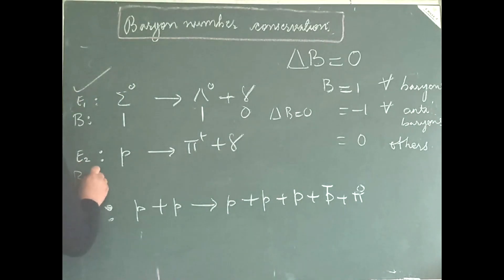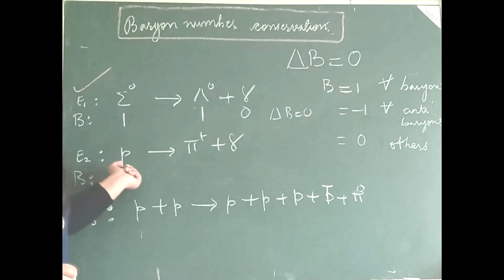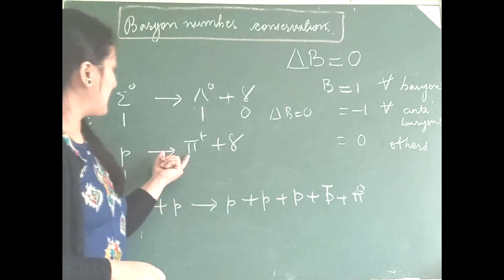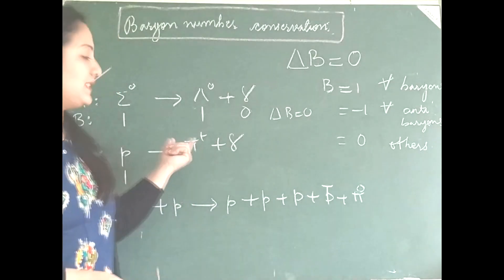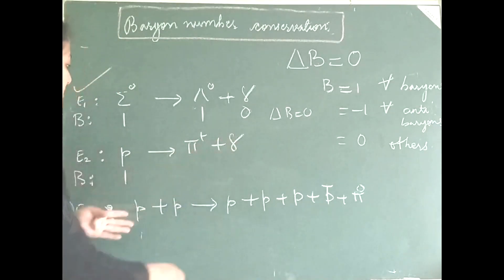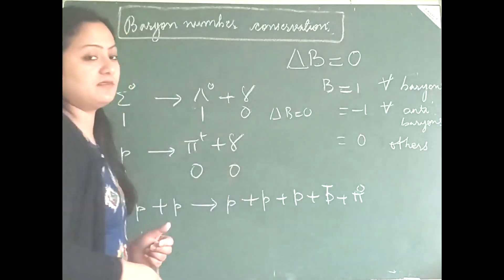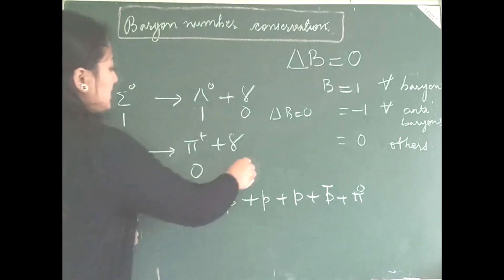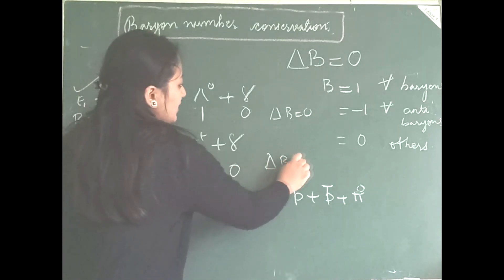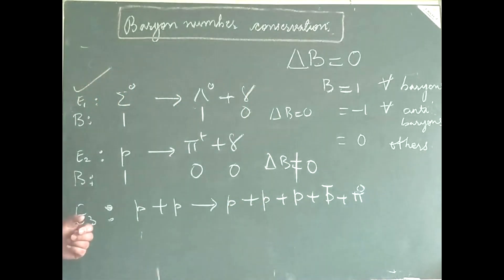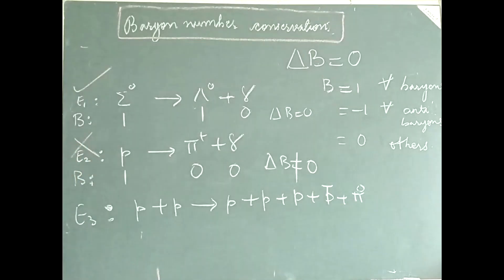Let us look into the other example. Proton is a baryon, baryon number 1. Pi plus — these are mesons, not baryons — so 0. Photon is again an exchange particle, so 0. Delta B is not equal to 0, so baryon number is not conserved in this second example.